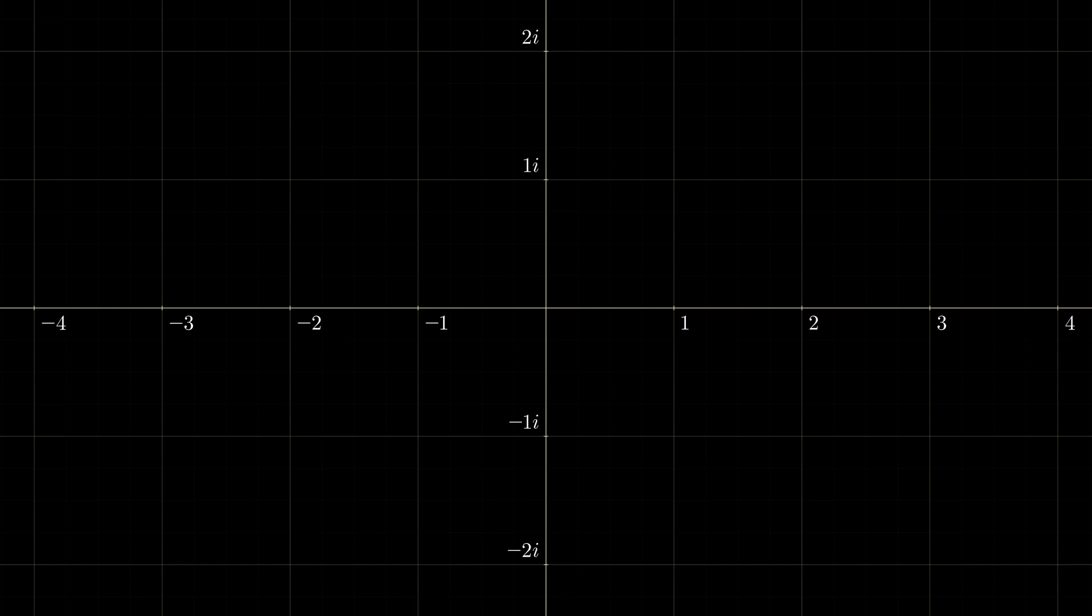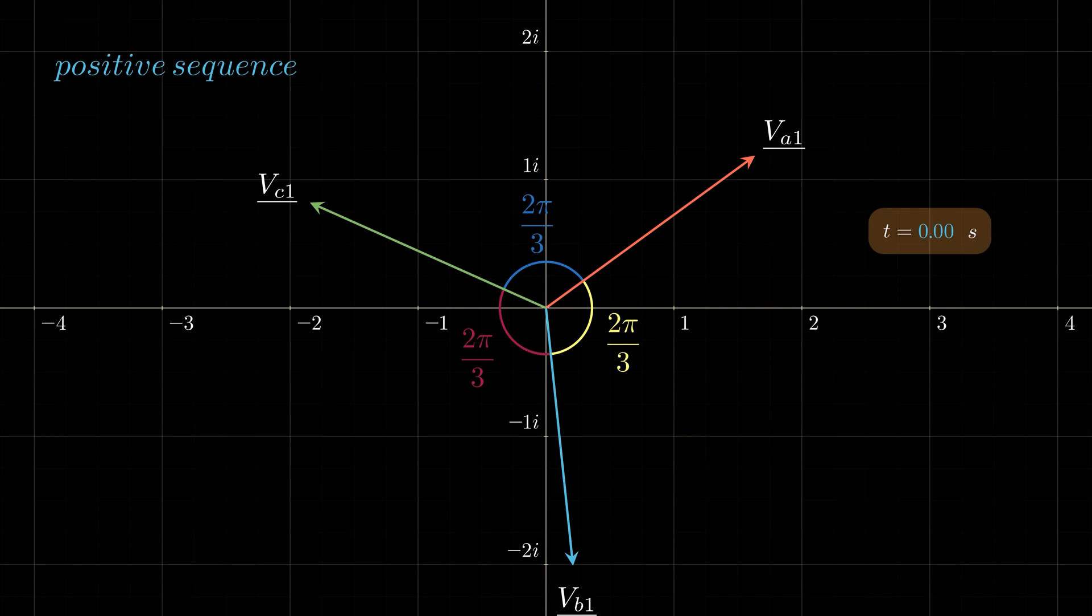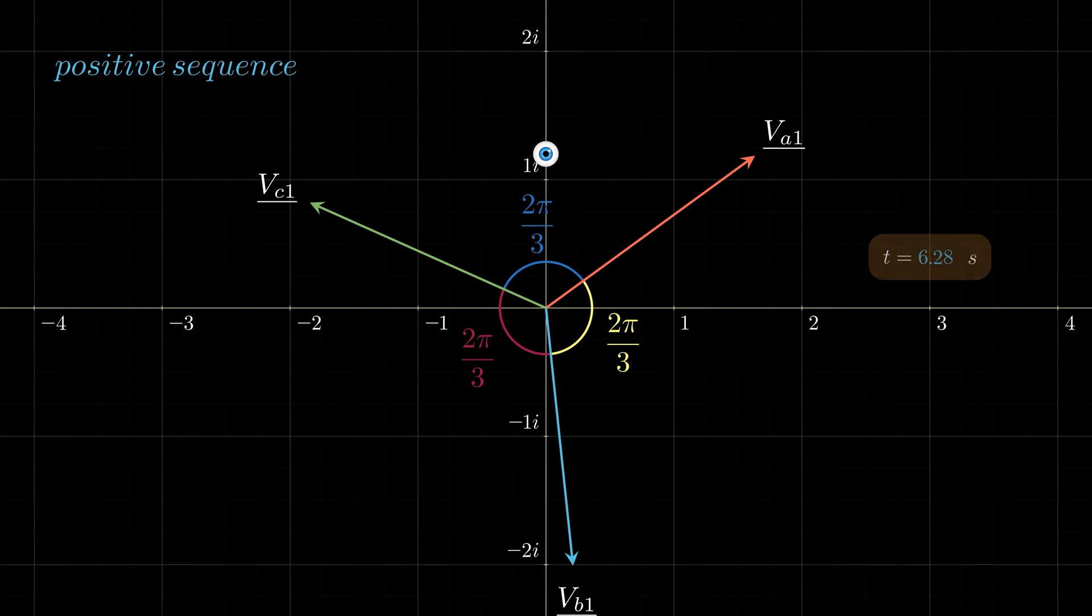There are three kinds of balanced systems referred to as sequences. The first is called the positive ABC balanced sequence. It is composed of three phases A, B, and C, and is indicated by the subscript 1. The three phasors have the same magnitude, are equidistantly spaced around the circle and separated by phase shifts of 2π/3. They also rotate at the same frequency, which is, as we said before, either 50 hertz or 60 hertz. If we were to place an observer anywhere on the grid, they would see the phases pass in the order A, then B, then C—hence the name positive sequence.